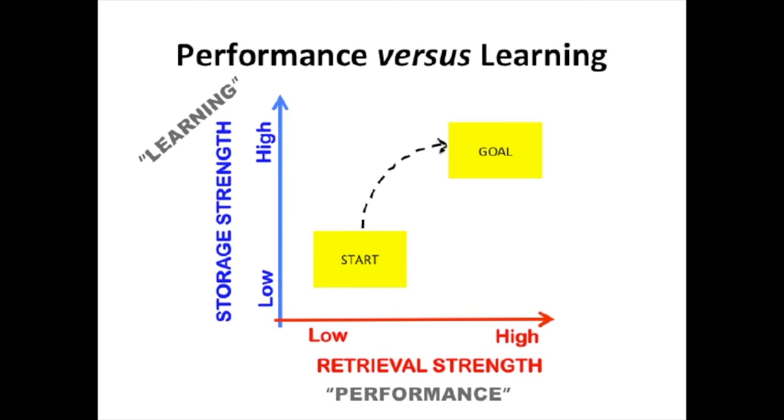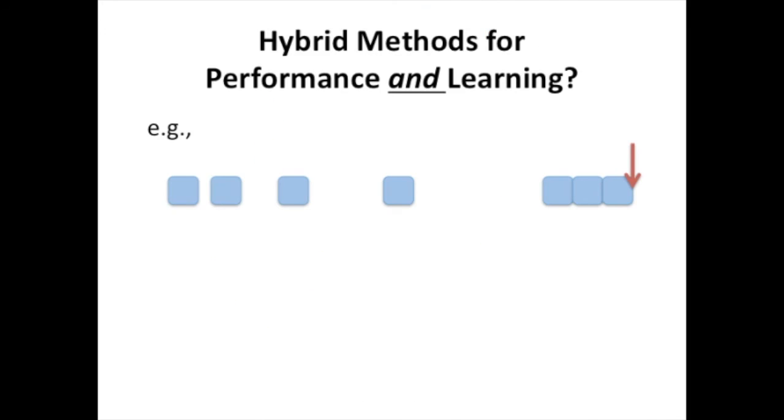How do we get from our starting point, low retrieval strength and low storage strength, to our goal of high performance or high retrieval strength and high learning or high storage strength? The literature generally shows us that the things that help learning are the ones that slow down performance. So to get to our goal, we have to go through low performance. This suggests that we need to create a space for safe failures during training. But also, we can think of ways to get to our goal while promoting performance as it is needed. Can we turn performance versus learning into performance and learning? Perhaps there are hybrid methods that target both performance and learning.